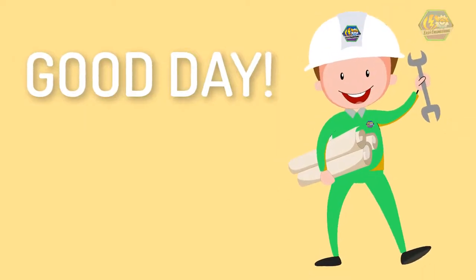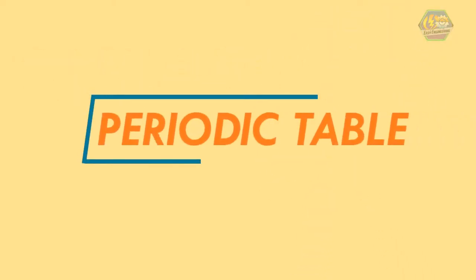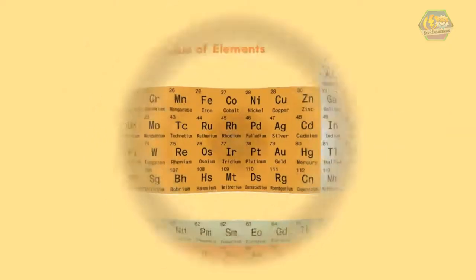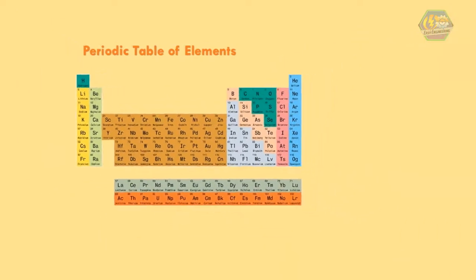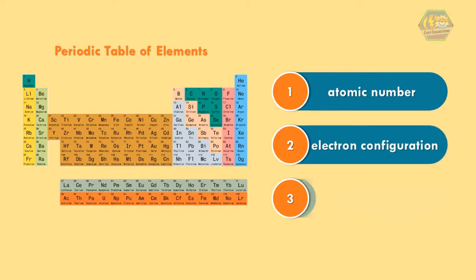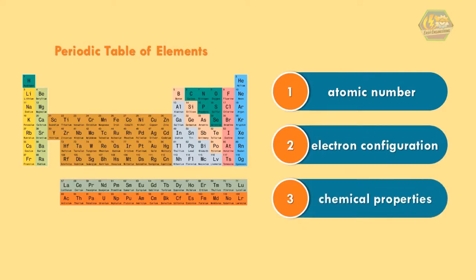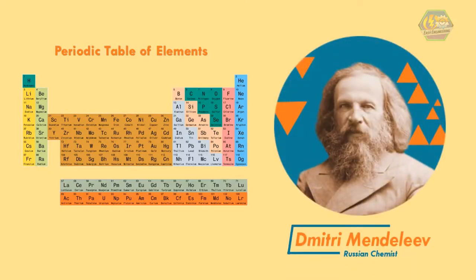Good day learners, this is Easy Engineering. This time we're going to talk about the periodic table of elements. The periodic table of elements is a tabular display of the chemical elements, arranged by atomic number, electron configuration, and recurring chemical properties. It was in 1869 that Russian chemist Dmitry Mendeleev published the first recognizable periodic table.